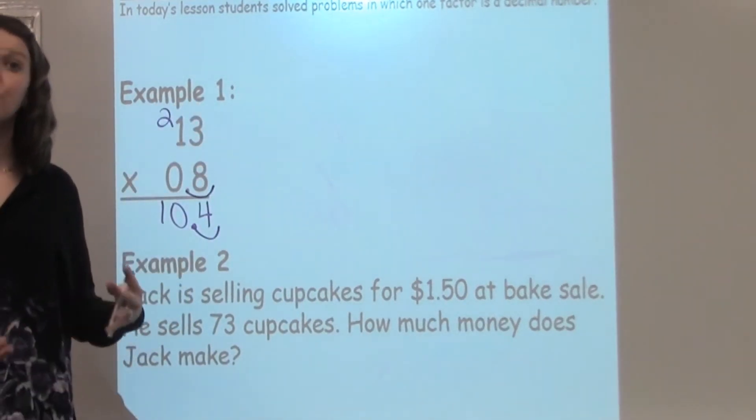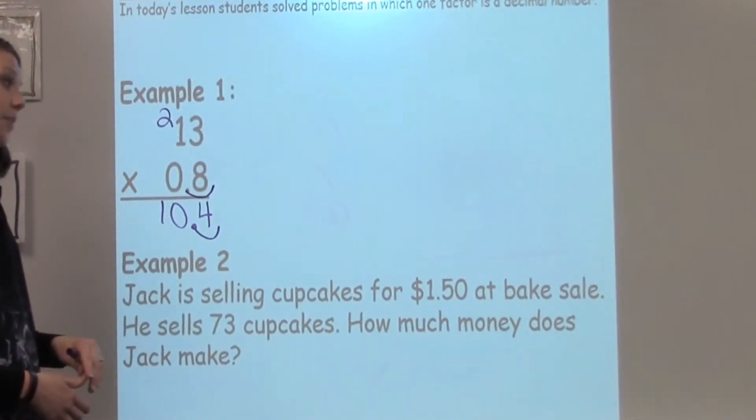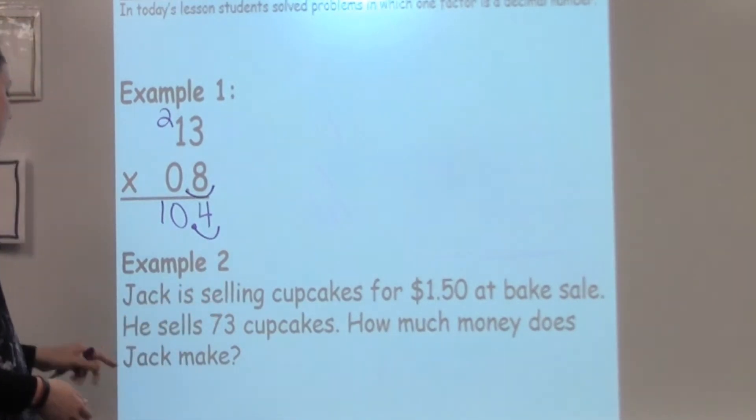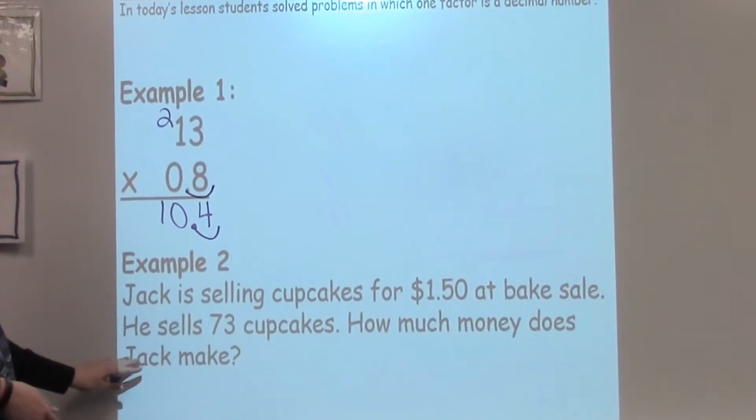Example number 2 leads us to word problems. This word problem says, Jack is selling cupcakes for $1.50 at a bake sale. He sells 73 cupcakes. How much money does Jack make?